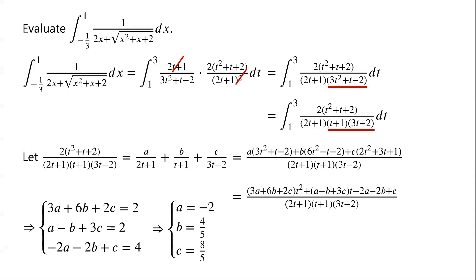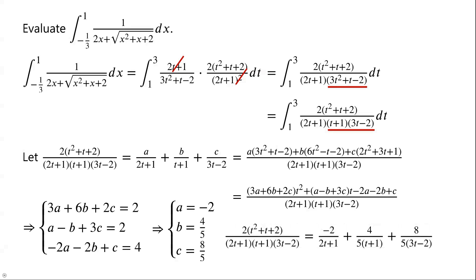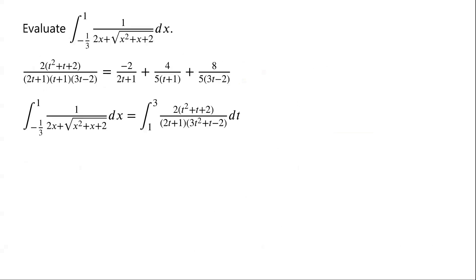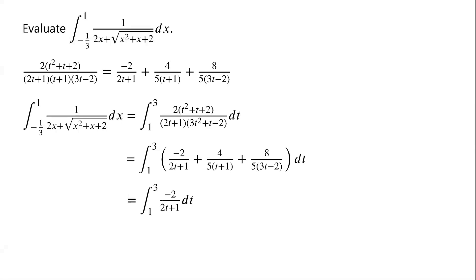So the integrand can now be written as negative 2/(2t plus 1) plus 4/[5(t plus 1)] plus 8/[5(3t minus 2)]. The integral from 1 to 3 equals the integral of negative 2/(2t plus 1) dt from 1 to 3, plus the integral of 4/[5(t plus 1)] dt from 1 to 3, plus the integral of 8/[5(3t minus 2)] dt from 1 to 3.